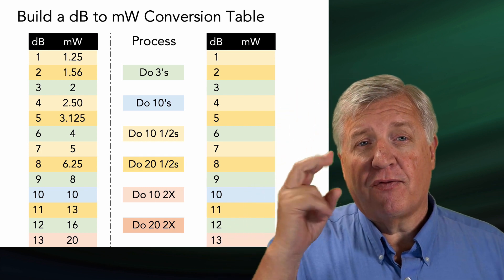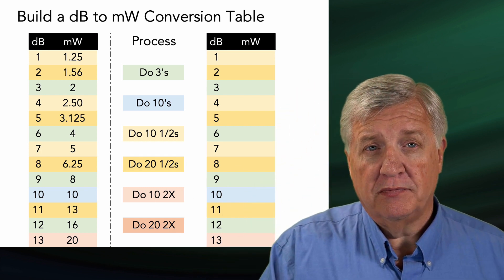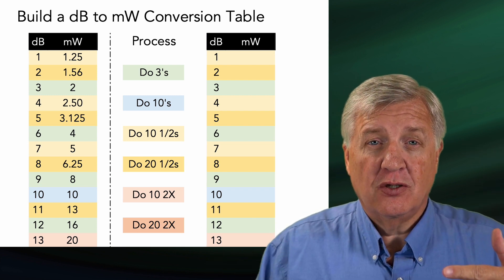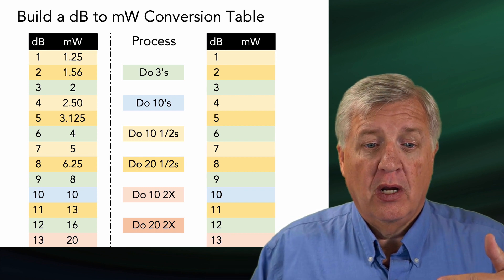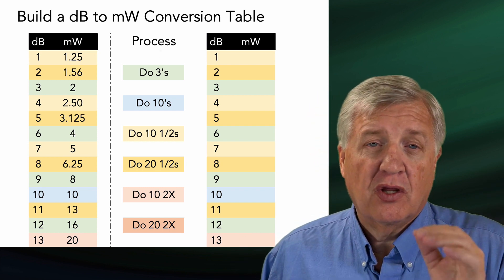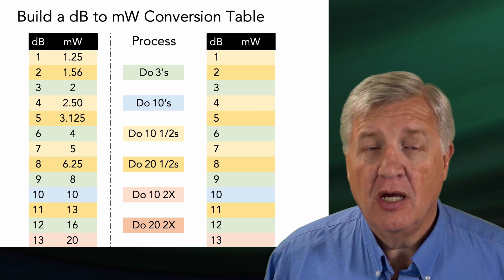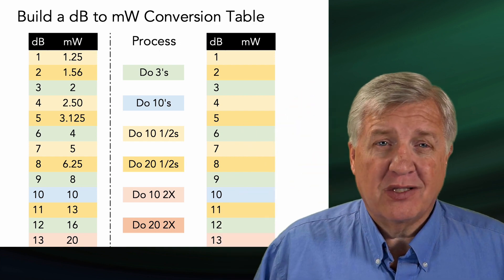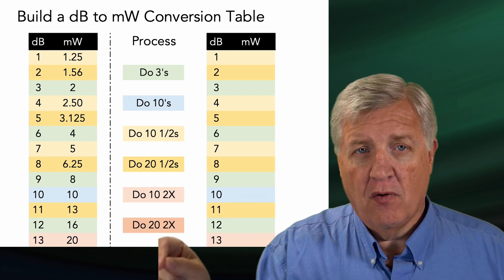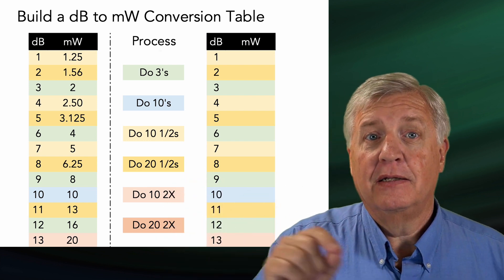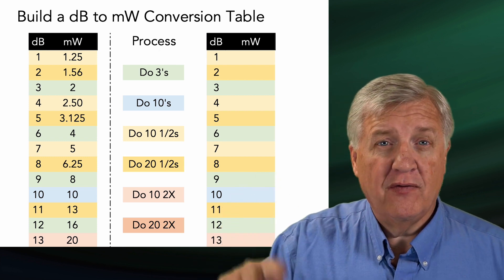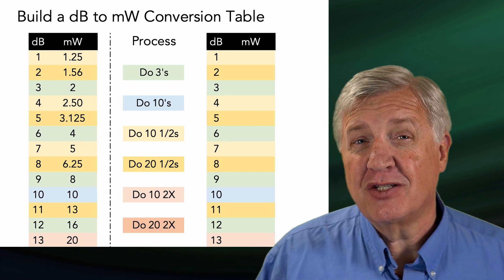We know that 3 equals 2. So 3 is 2. If we have two 3s, that's 6 — and 6 is going to be 2 times 2, which is 4. When you get to 9, it's going to be 8. When you get to 12, it's going to be 16. Those are the green ones — do the 3s first. Build a little chart, 1 through 36 or whatever you want, and then do the 3s: 3 is 2, 6 is 4, 9 is 8, 12 is 16. Just fill in 2, 4, 8 — that's going to do all the 3s.